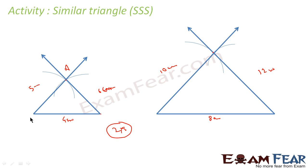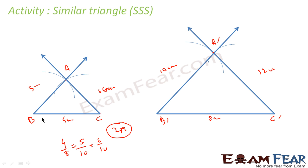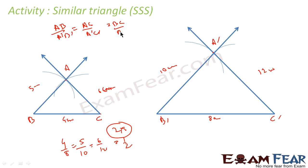Let's label the first triangle as A, B, C and the second as A', B', C'. Since we drew the second triangle such that 4/8 = 5/10 = 6/12, we have BC/B'C' = AB/A'B' = AC/A'C'. We have drawn them in such a way that the sides are proportional.